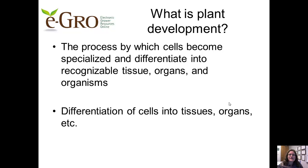So what's plant development? This is the process by which cells become specialized and differentiate into recognizable tissues, organs, and organisms. Visualize, as a plant grows, cells differentiating into first a specific tissue, and then a specific organ like a leaf versus a flower.